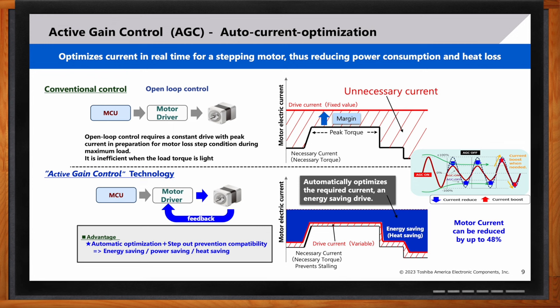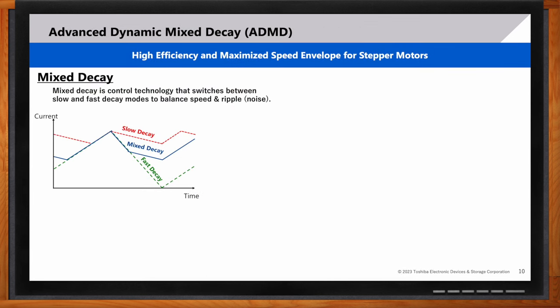All right. So, what about the ADMD? Can we talk about that a bit as well? Sure. ADMD, Advanced Dynamic Mixed Decay, allows us to increase the efficiency and maximize the speed we can get from stepper motors. Mixed decay is a fairly common technology. Basically, it's a technique where you switch the decay mode between fast and slow decay to balance the benefits of both. Slow decay is good for low current ripple and gives you smooth and efficient drive. But it's not very good for a high-speed rotation. Whereas fast decay is very good for high-speed rotation, but gives you a large current ripple, making it unsuitable for smooth and efficient drives.